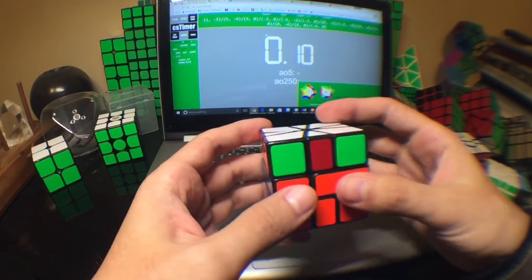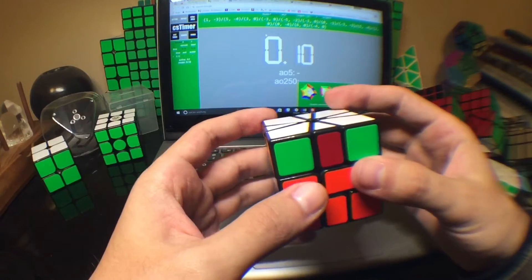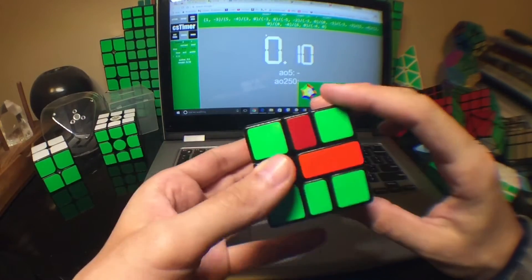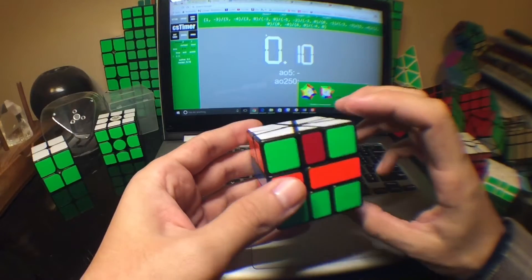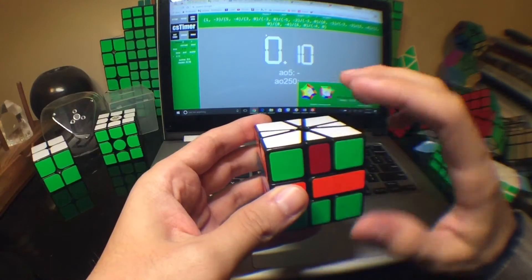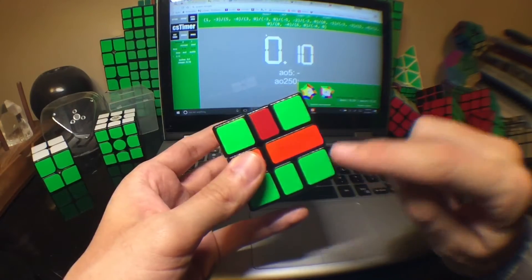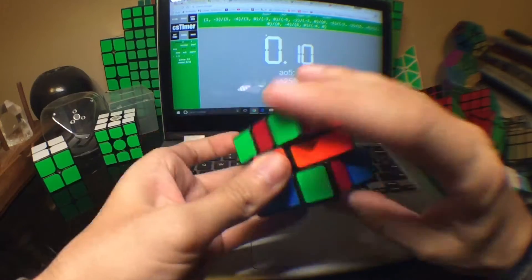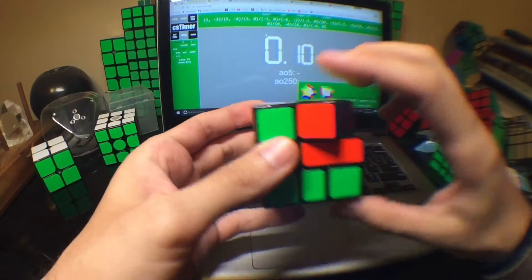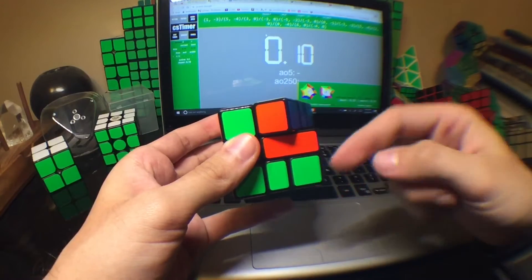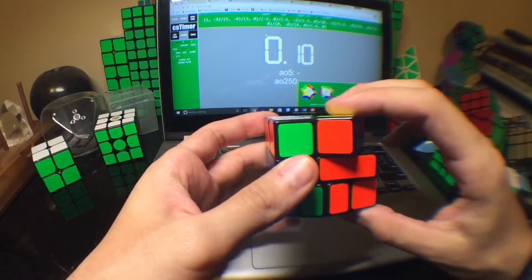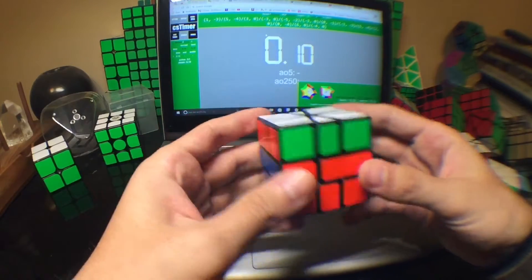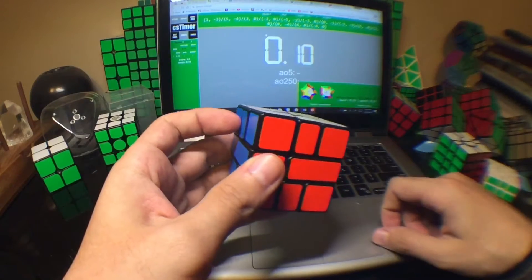For AUF slash ADF purposes, I would start the algorithm with green in the bottom. The algorithm I normally use will flip the equator, so I'll cancel into flipping the equator with the bottom layer. Normally you would do it with the bottom layer like a negative 3 and then slice, but I'll do a positive 3 on bottom, slice, 6 on bottom, slice, and then all you have to do now is a U-prime.